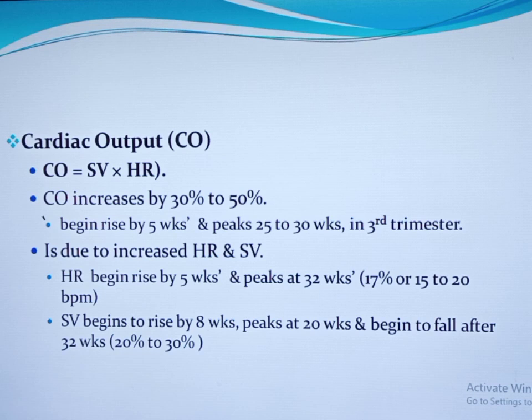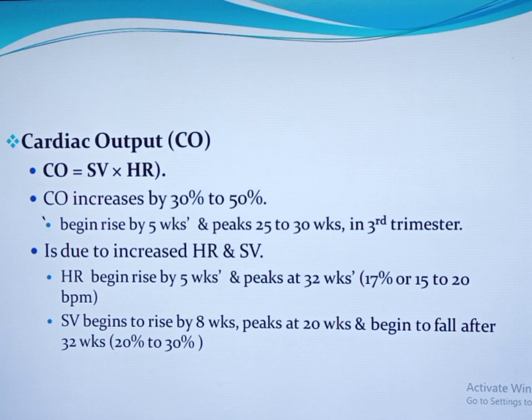Cardiac output is a product of stroke volume and heart rate. In a singleton pregnancy, cardiac output increases by 30 to 50 percent above the non-pregnant value. In twin pregnancy, there is an additional 20 percent increment over the singleton. It begins to rise by five weeks of gestation. The exact gestational age where cardiac output peaks is controversial, but most agree it peaks at 25 to 30 weeks of gestation. In the third trimester of pregnancy, there is little or no change in cardiac output.